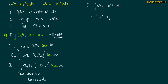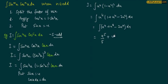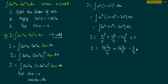Expanding (1 - u²)² gives 1 + u⁴ - 2u², so we have u⁴ + u⁸ - 2u⁶. Integrating: u⁵/5 + u⁹/9 - 2u⁷/7 + c. Substituting back u = sin x, we get sin⁵x / 5 + sin⁹x / 9 - (2/7) sin⁷x + c. So this will be my required result.